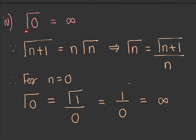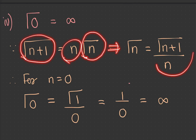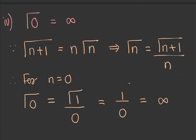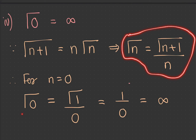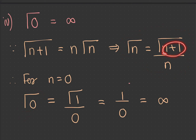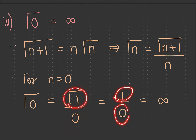The fourth property is that gamma of 0 equals infinity. Using the rearranged formula, gamma of n equals gamma of n plus 1 divided by n. Putting n equal to 0, gamma of 0 equals gamma of 1 upon 0. Since gamma of 1 is 1, this gives 1 upon 0, which is infinity. Therefore gamma of 0 equals infinity.